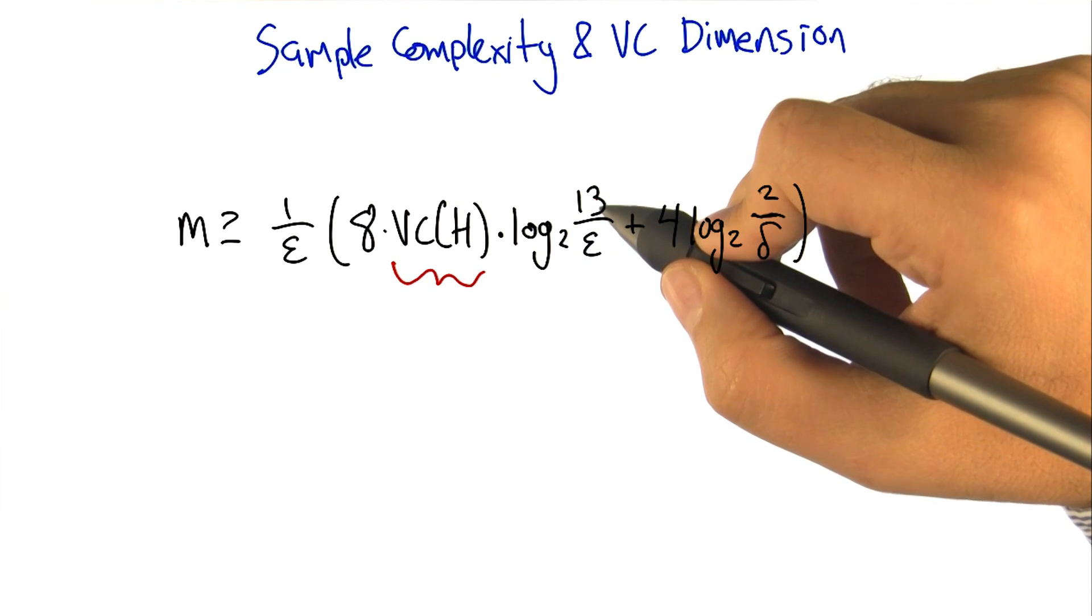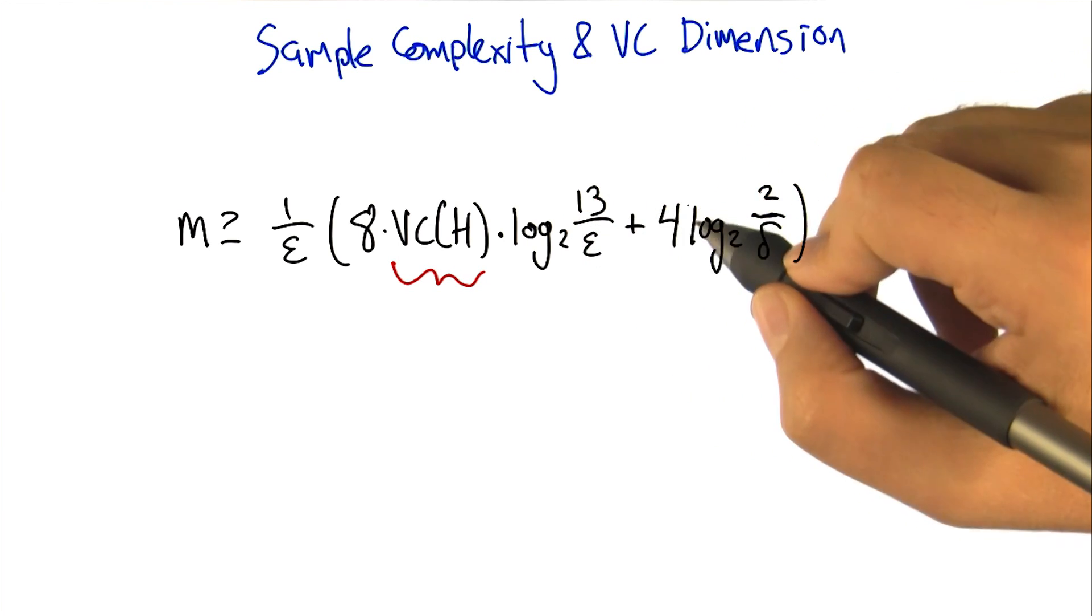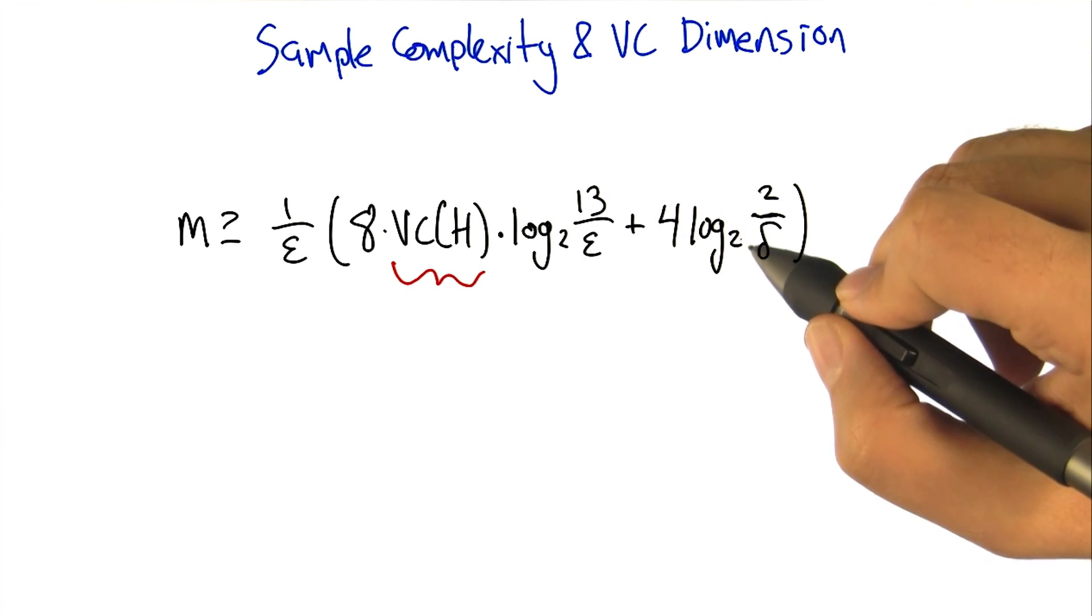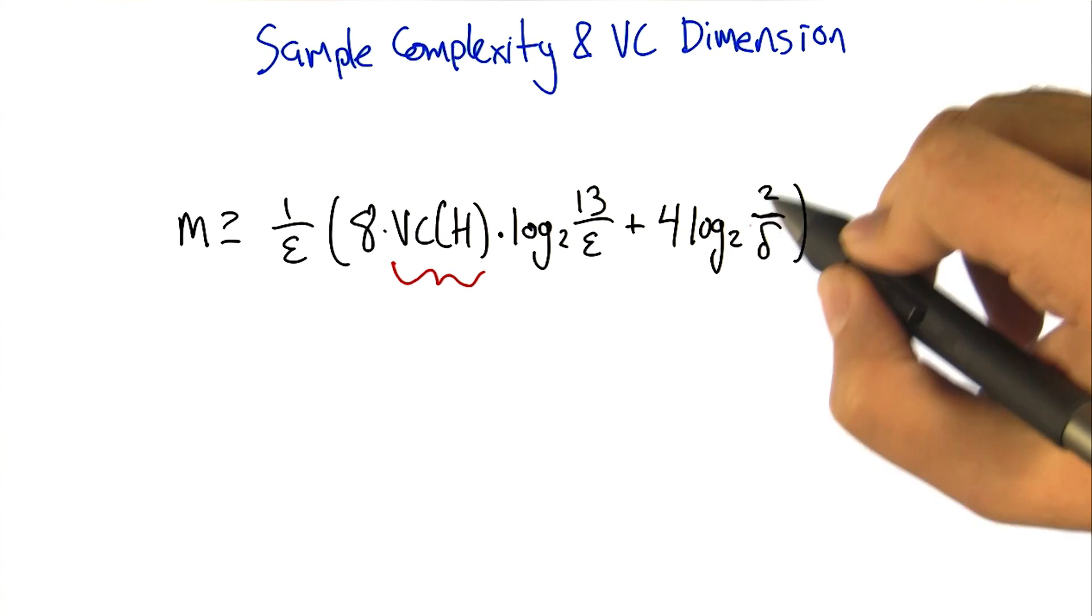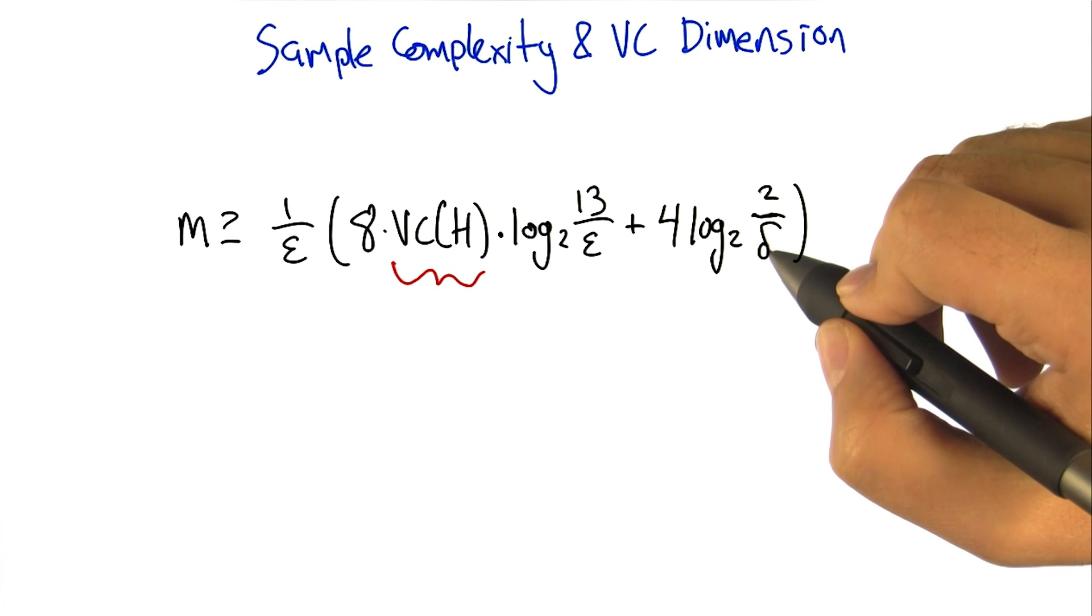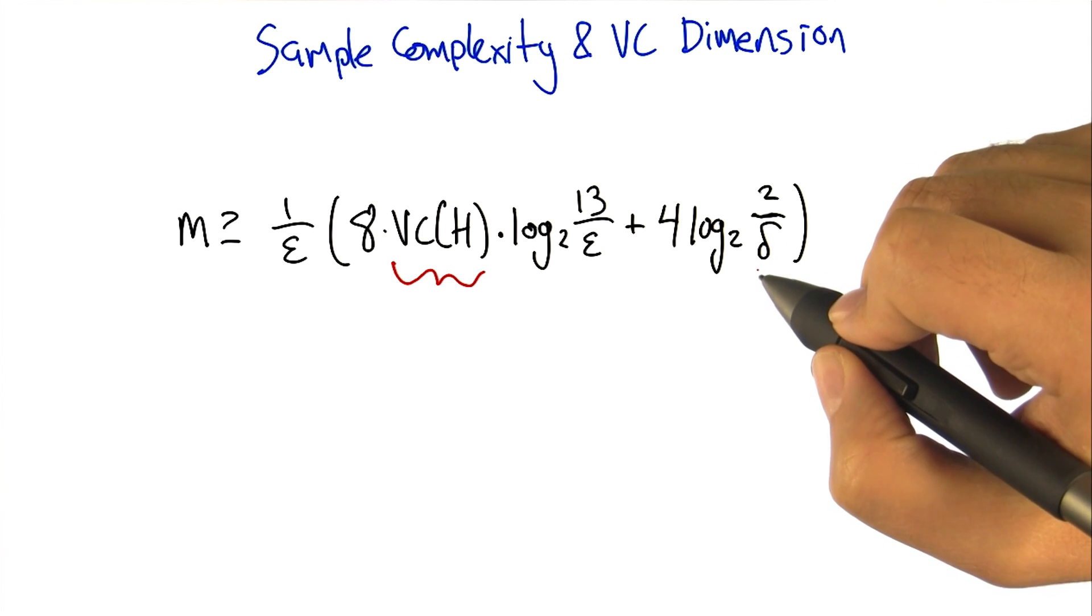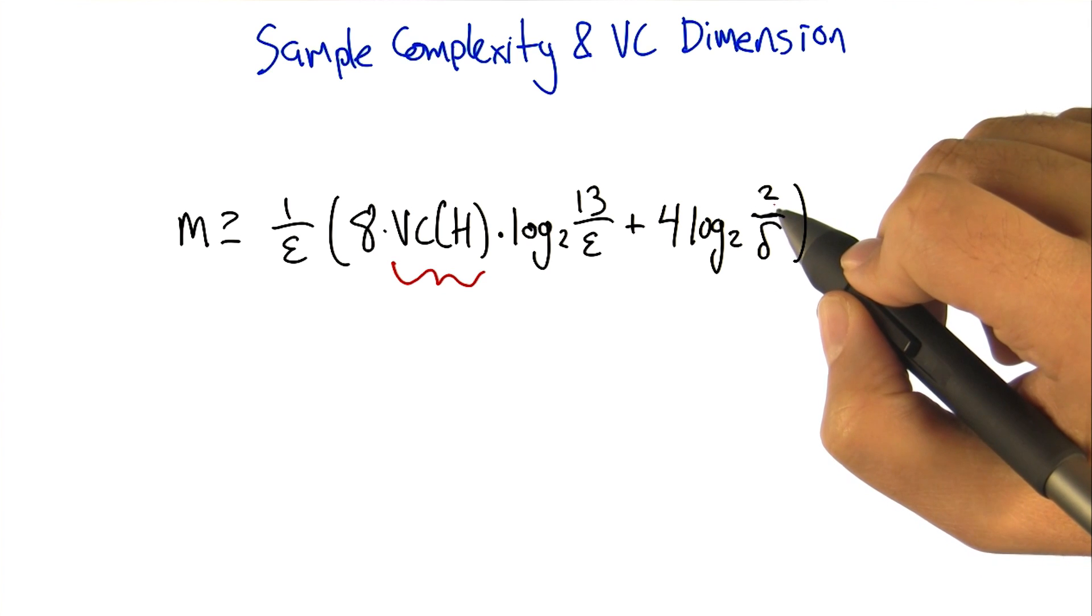Times the log base 2 of 13 over epsilon. Plus, 4 times the log base 2 of 2 over delta. So again, this log of something like 1 over delta, the inverse of delta, was in the other bound as well. That's capturing how certain we need to be that things are going to work.